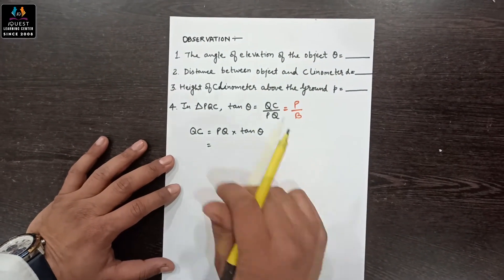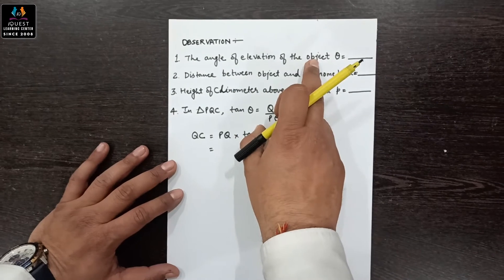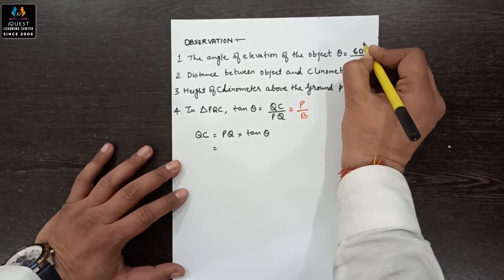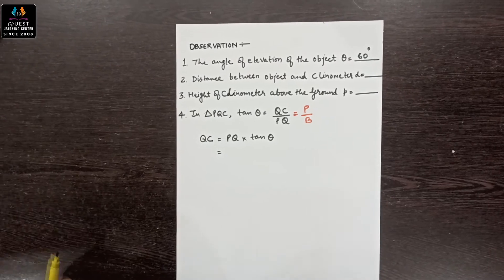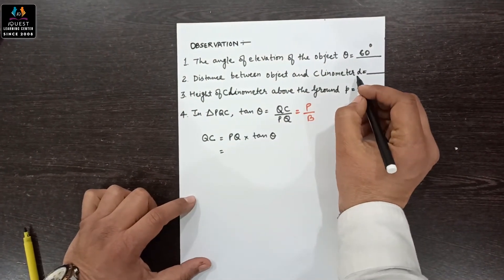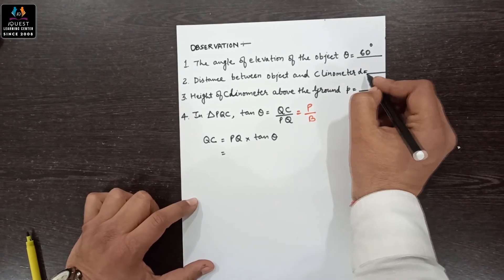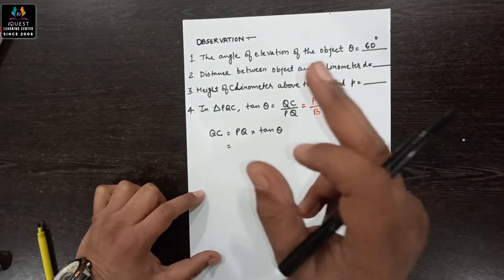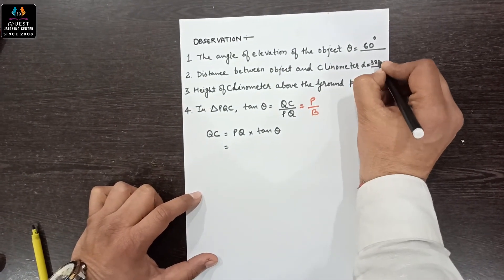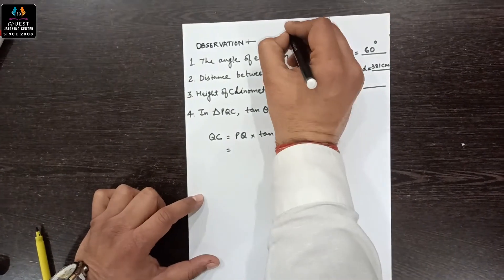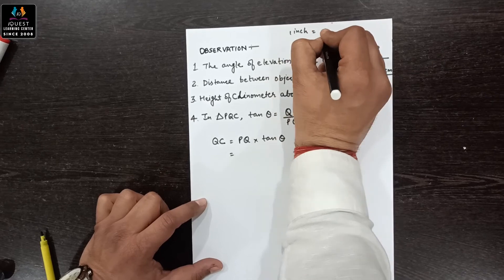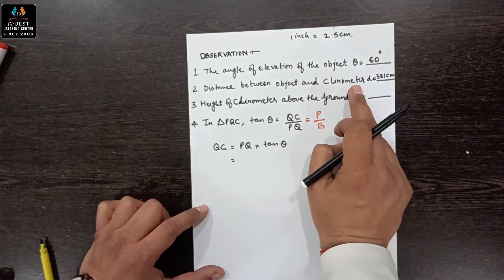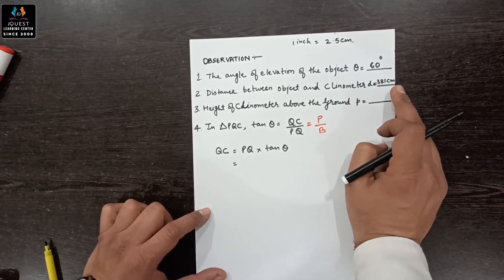Now let's discuss the observations. The angle of elevation theta is 60 degrees. The distance between the object and clinometer, d, is 150 inches. Converting 150 inches into centimeters — since one inch equals 2.54 centimeters — d equals 381 centimeters.